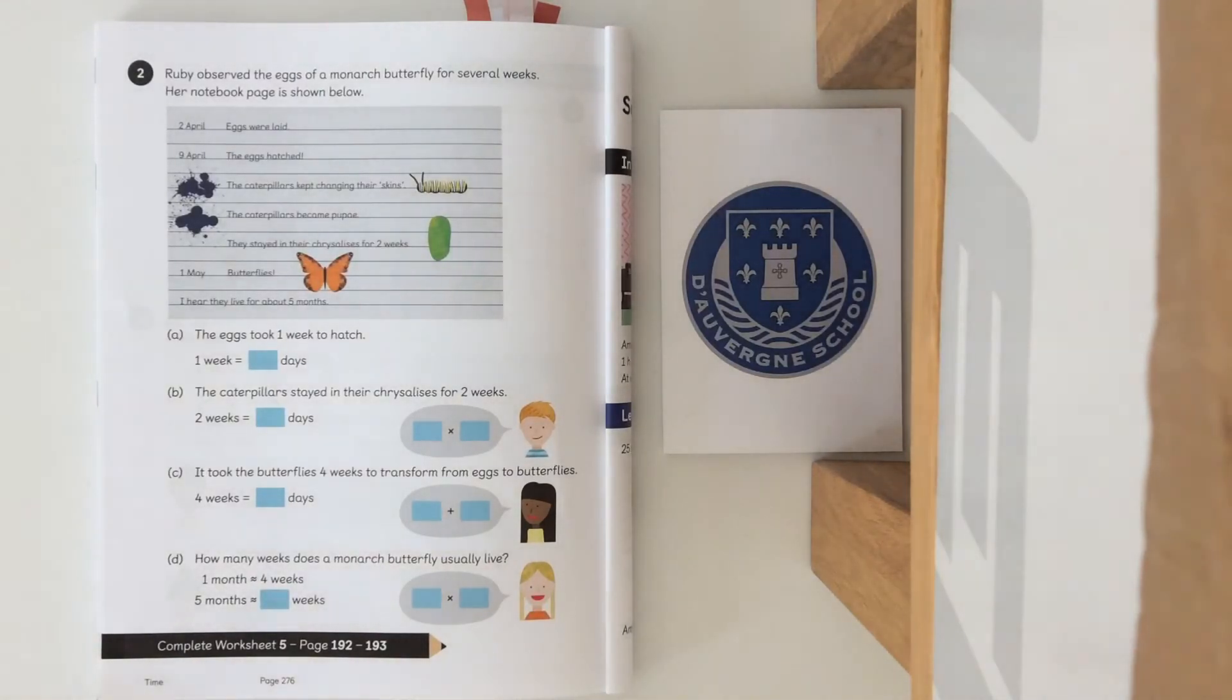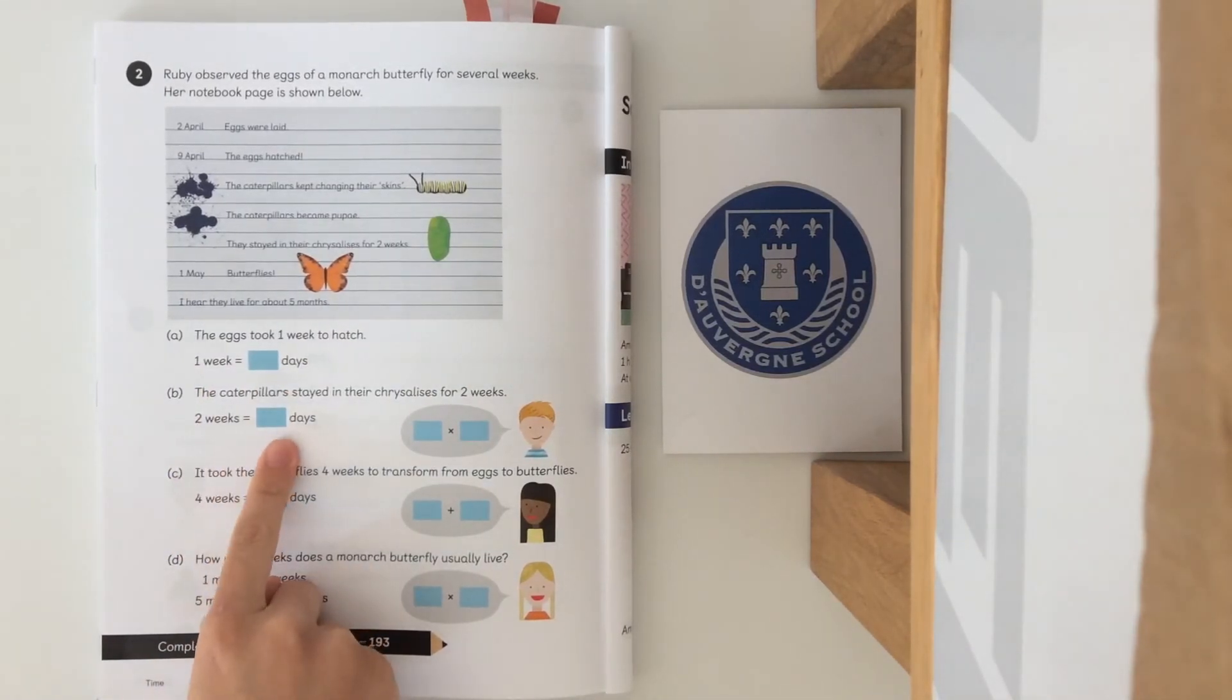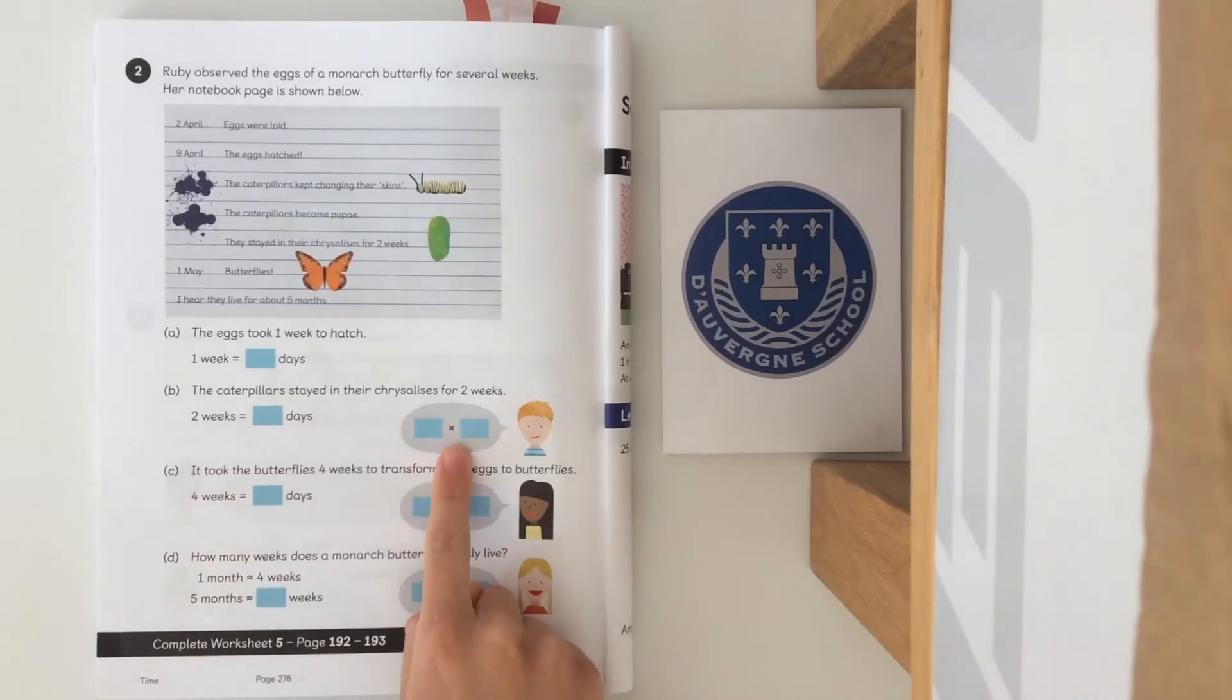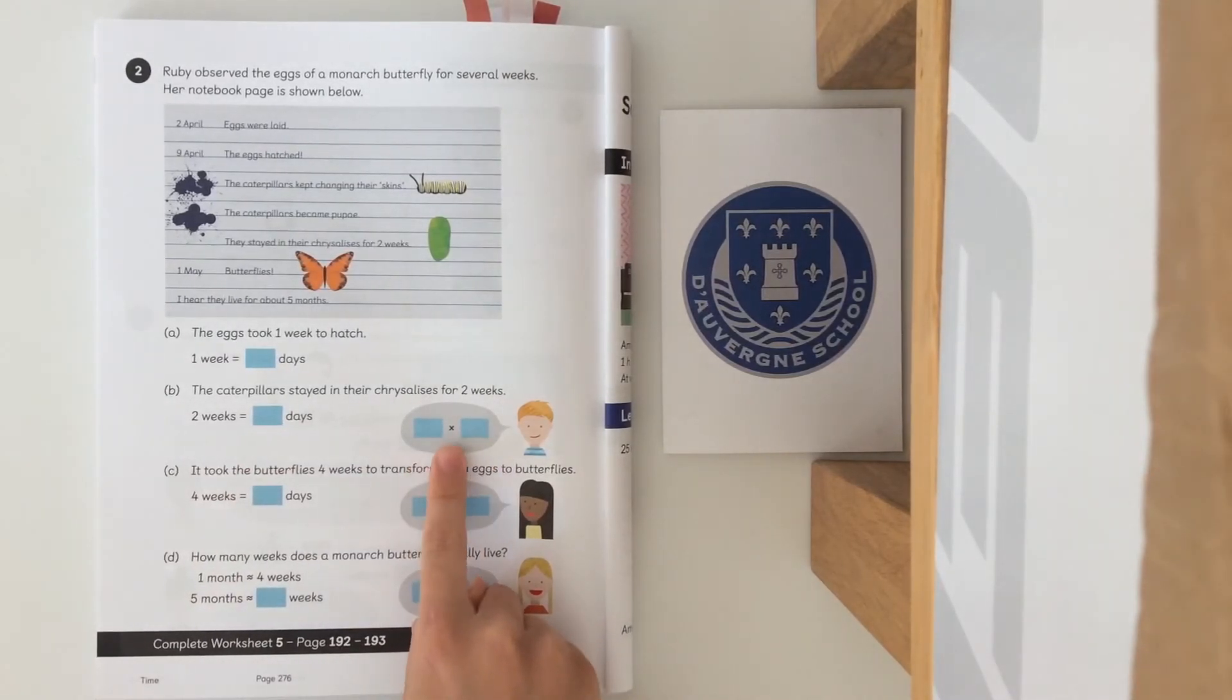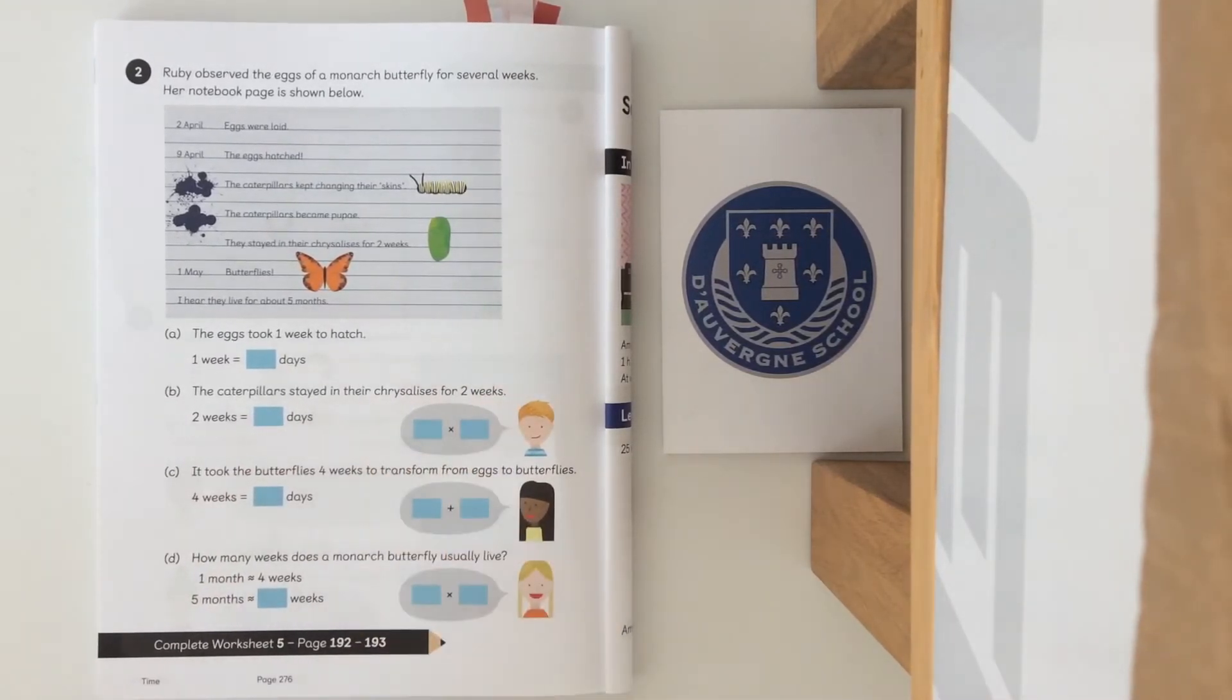For question A: one week equals seven days. Two weeks equals 14 days or two times seven or seven times two. The rule of commutativity there - we can have it either way to get the same answer.